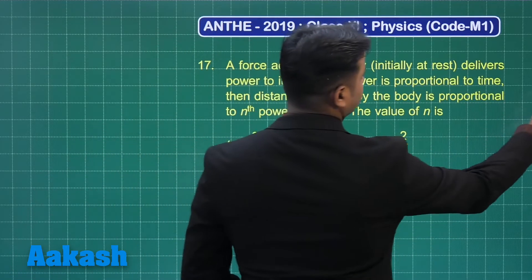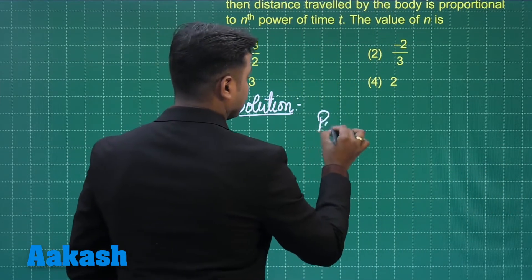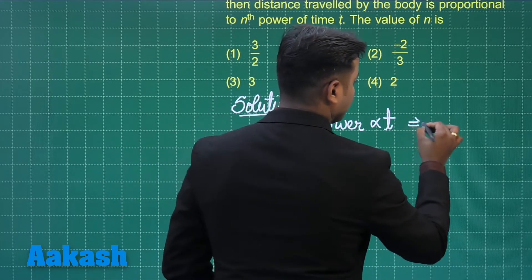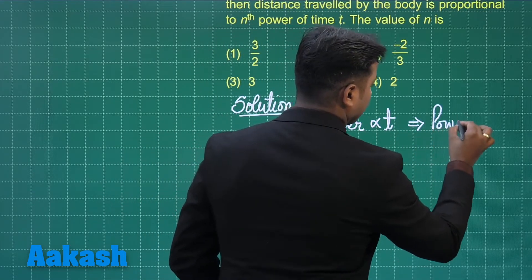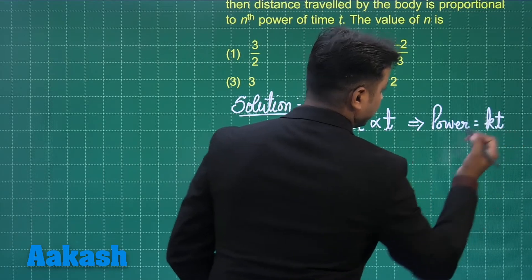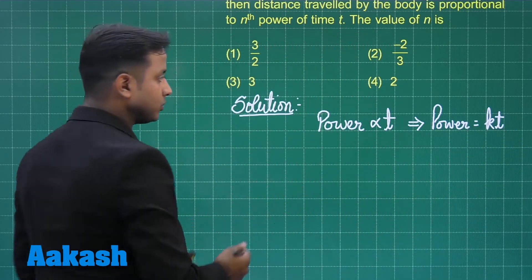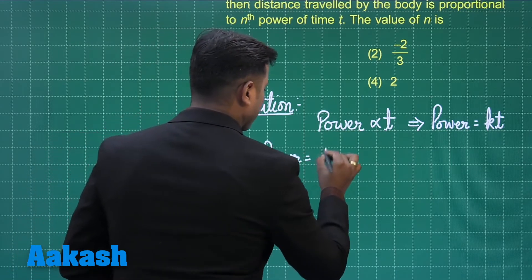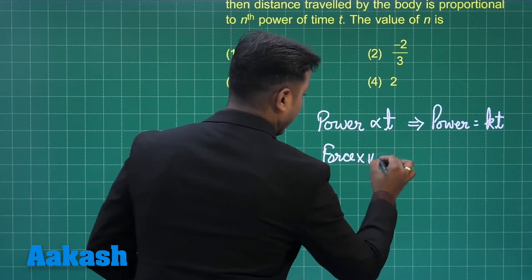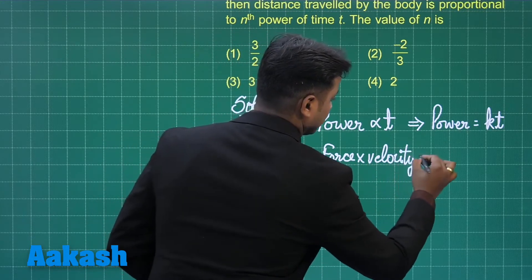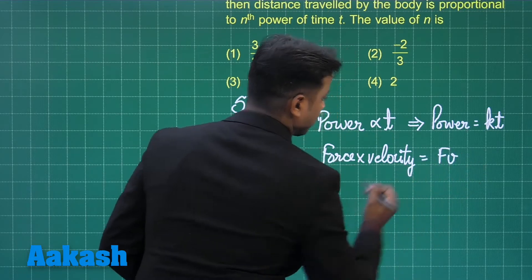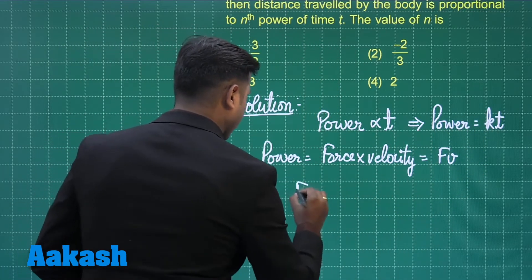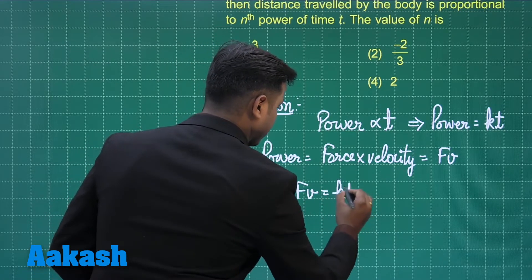As per the question, power is directly proportional to time, which means power equals some constant k times t. We know that power is the product of force and velocity, so F·V = k·t, giving us force into velocity equals a constant times t.